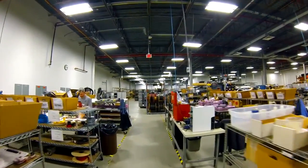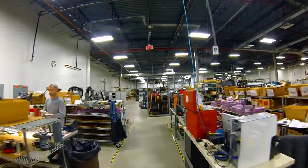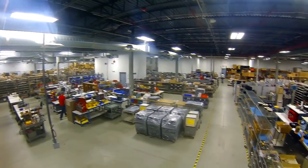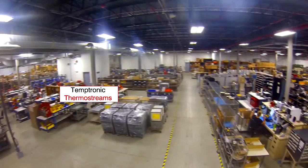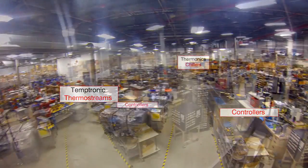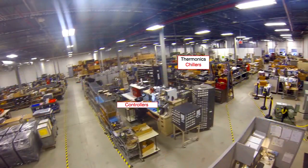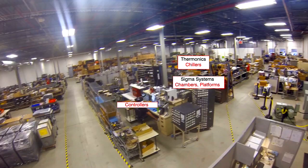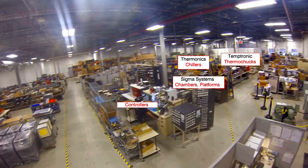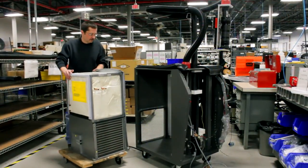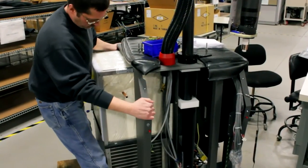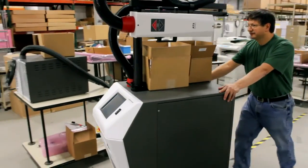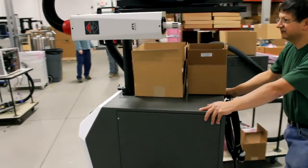There are five electromechanical assembly stations, one each for thermal streams, controllers, chillers, chambers and platforms, and thermal trucks. These stations are where chassis and refrigeration units are integrated with controllers and electronics. Once built, these assemblies are delivered to our final test area and are eventually our final inspection area.